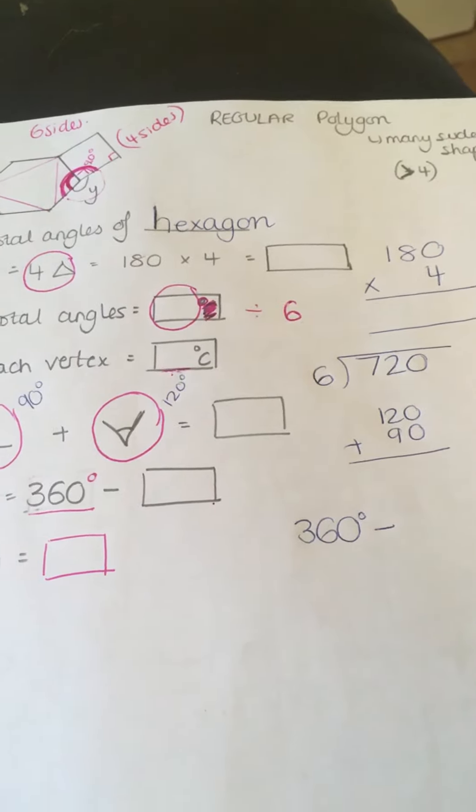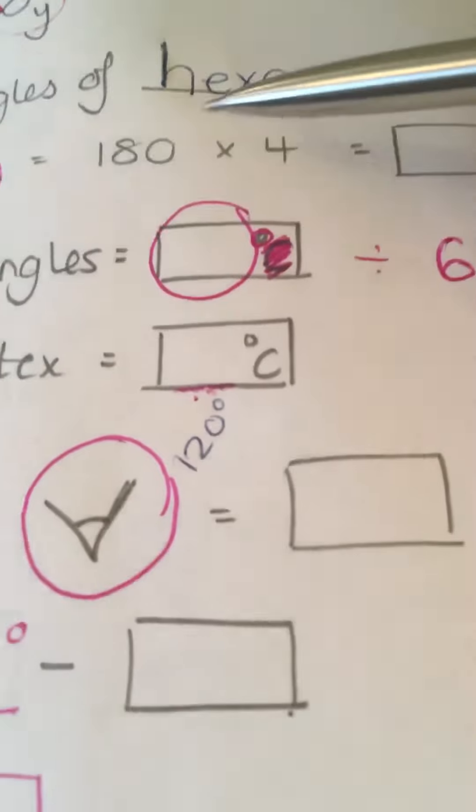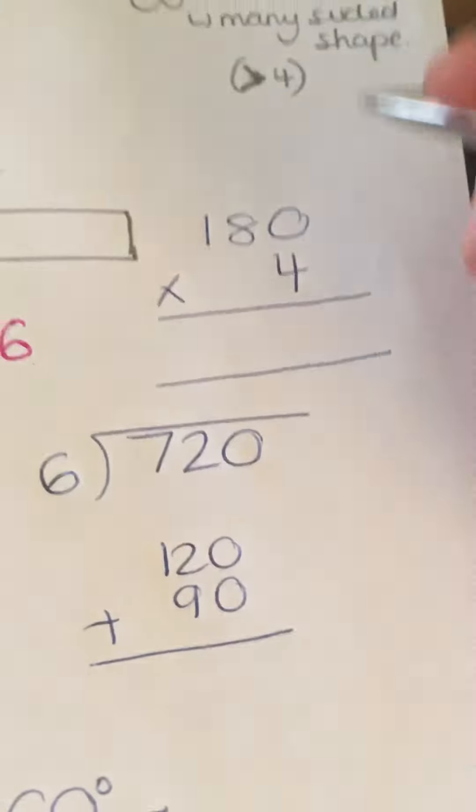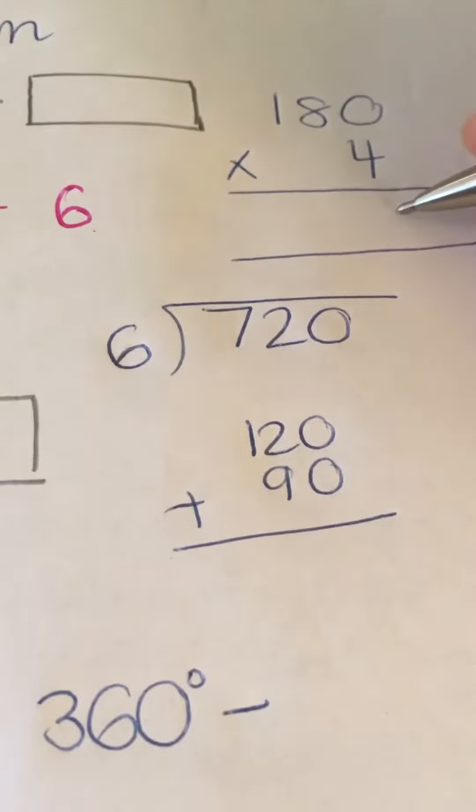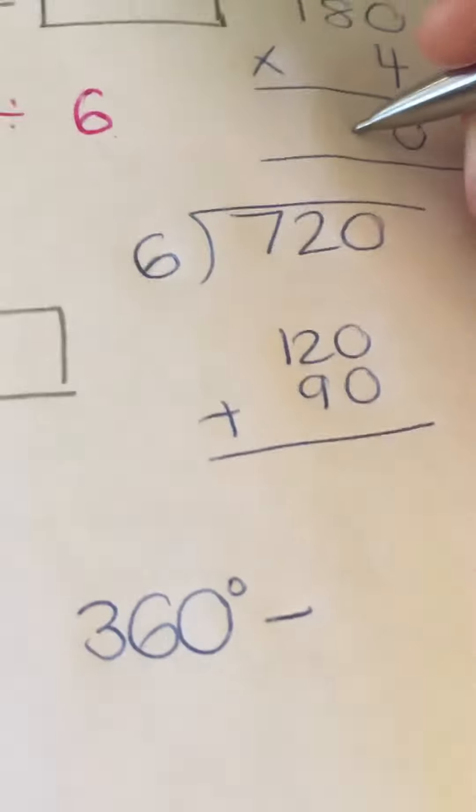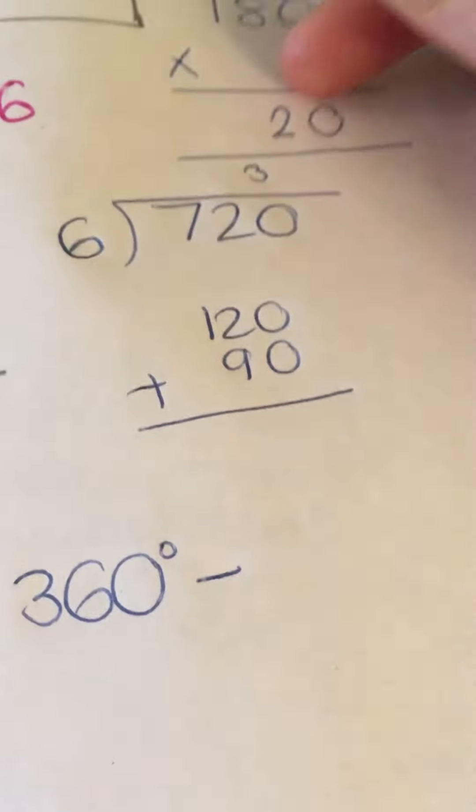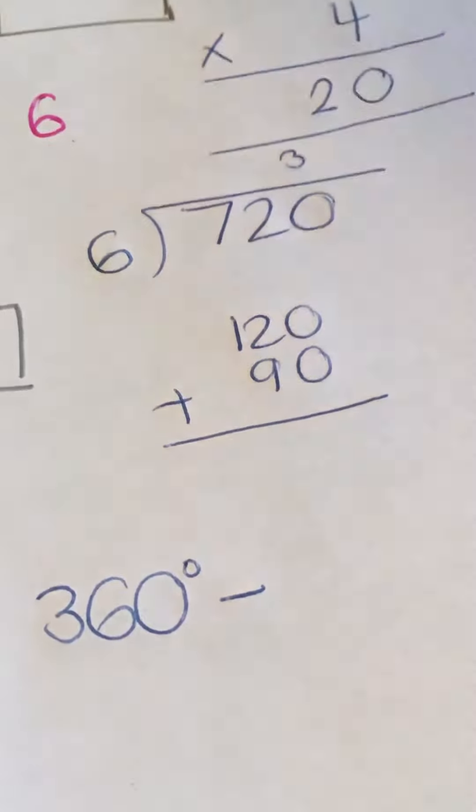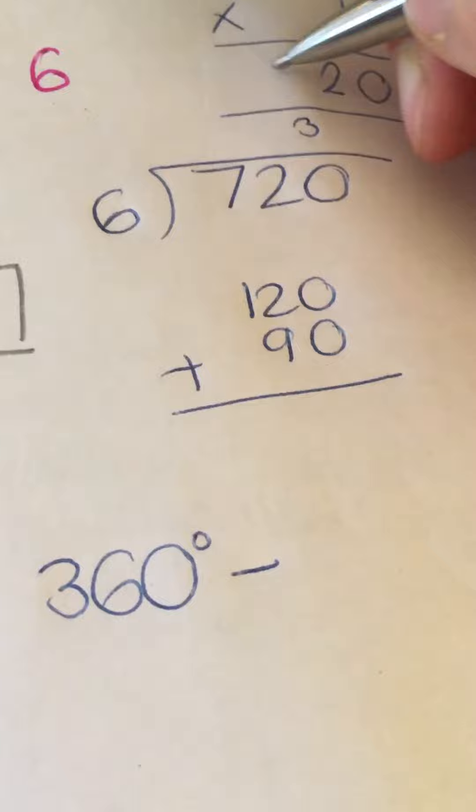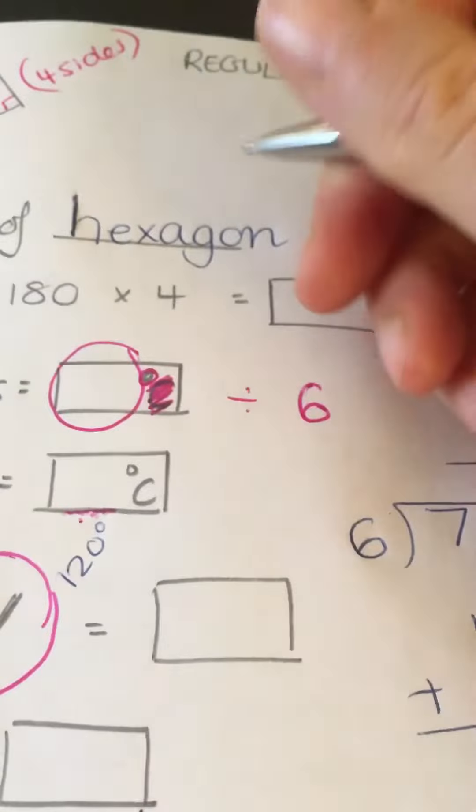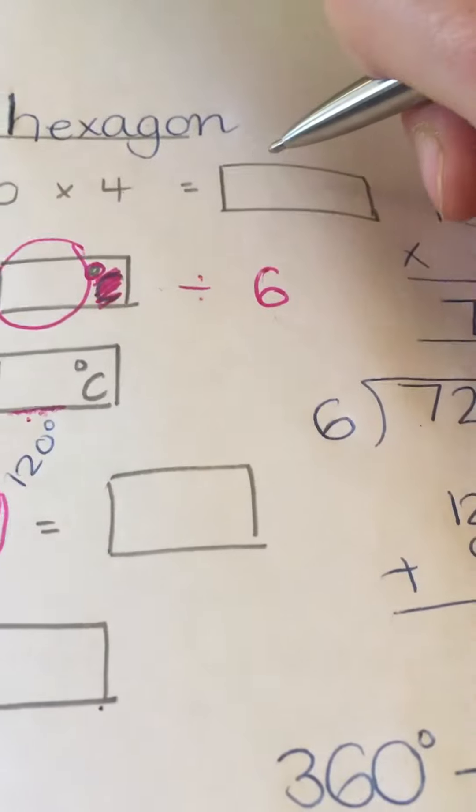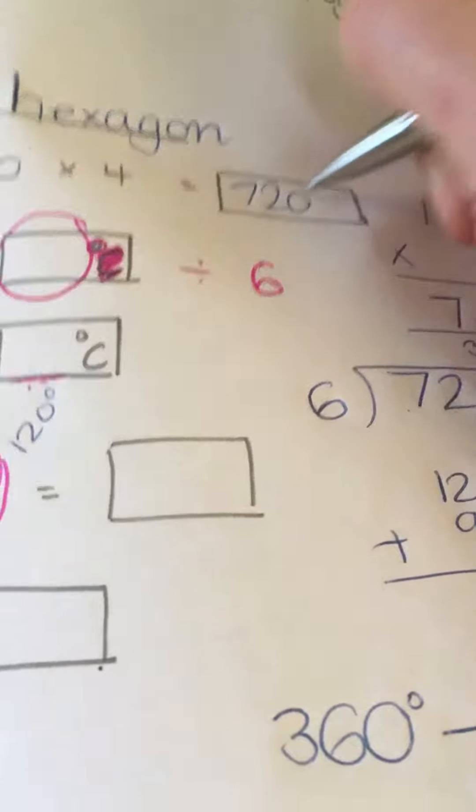And finally the calculations. So, 180 times 4. 0 times 4 is 0, 8 times 4 is 32, 1 times 4 is 4, add 3 is 7. So, the total internal angles is 720 degrees.